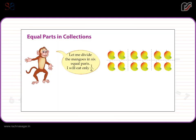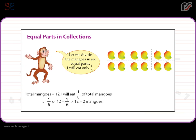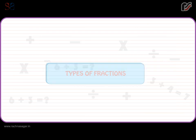Equal parts in collections. Let me divide the mangoes into six equal parts. I will eat only one by six. Total mangoes is equal to twelve. I will eat one by six of total mangoes. Therefore, one by six of twelve is equal to one by six multiplied by twelve, which is equal to two mangoes.